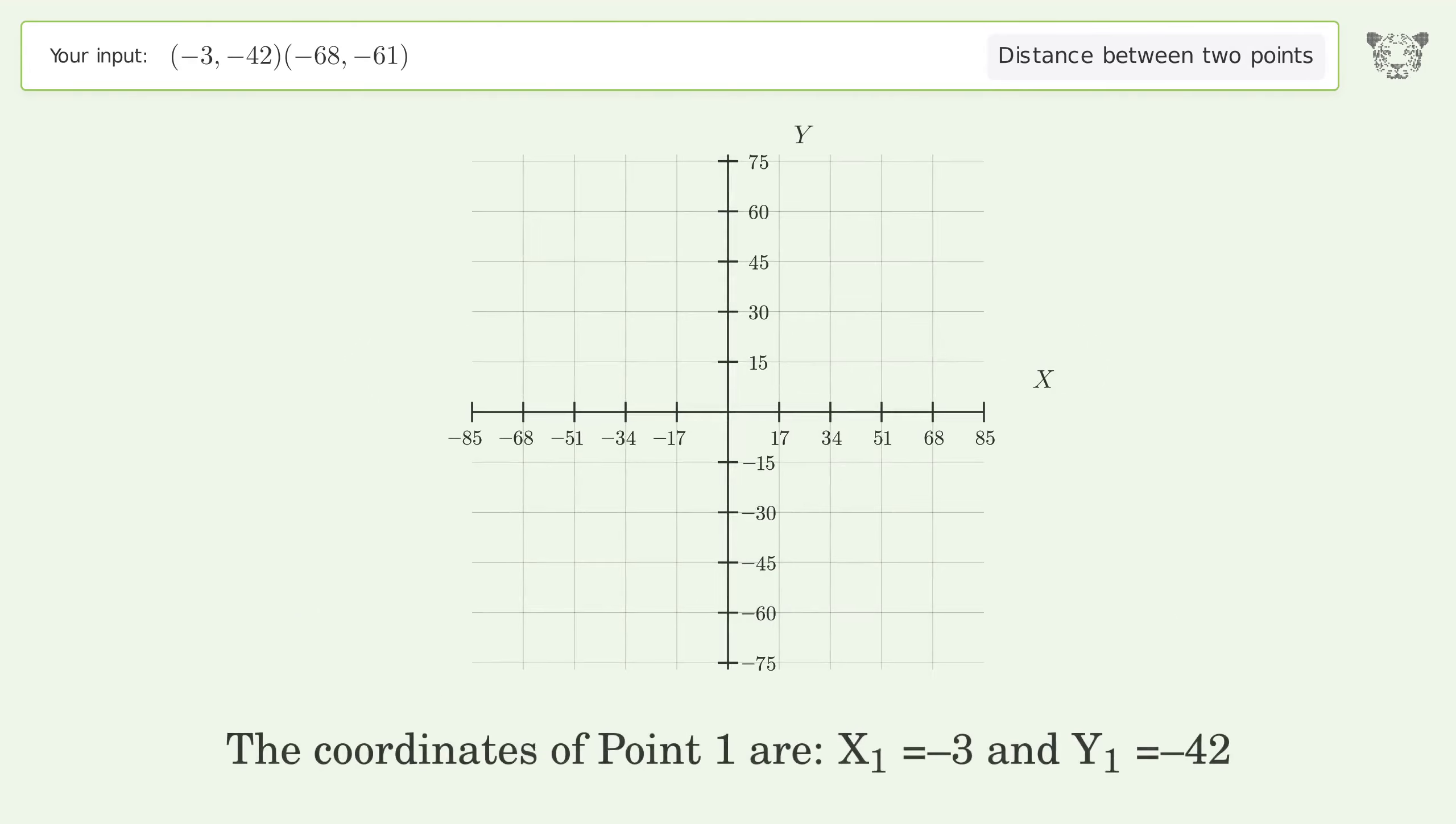The coordinates of Point 1 are X₁ = -3 and Y₁ = -42. The coordinates of Point 2 are X₂ = -68 and Y₂ = -61.